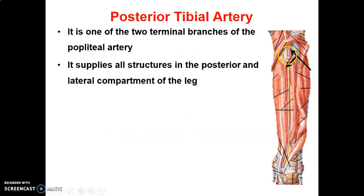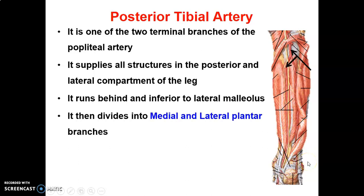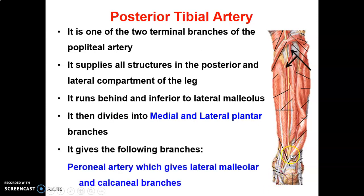The posterior tibial artery originates from the popliteal artery at the lower border of the popliteus muscle. It is one of the two terminal branches of the popliteal artery and supplies structures in the posterior and lateral compartments of the leg. It runs behind and inferior to the lateral malleolus, then divides into medial and lateral plantar branches within the tarsal tunnel. The posterior tibial gives off the peroneal artery, which gives lateral malleolar and calcaneal branches.